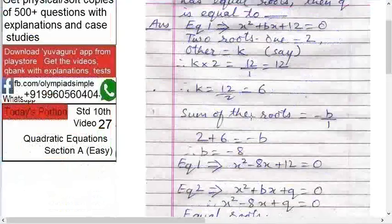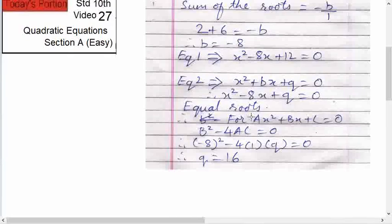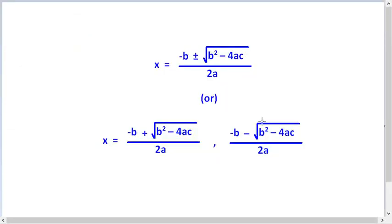We have just seen in the first problem, B capital B square minus 4ac equals to 0. This equation is ax square plus bx plus c, and b square minus 4ac equals to 0. So we have minus 8 the whole square minus 4 into a is 1 and c is q equals to 0.